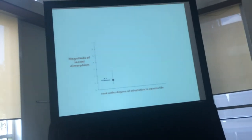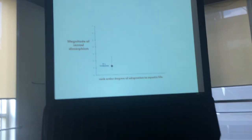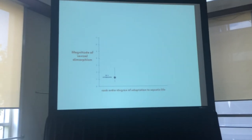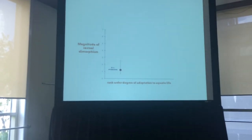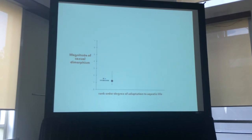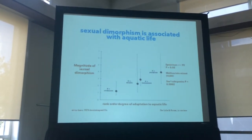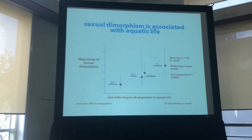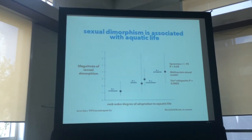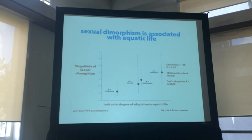First, we can ask whether we are getting the evolution of sexual dimorphism in the nascent stages of speciation. Plotting the magnitude of sexual dimorphism on the y-axis against the degree of adaptation to the aquatic phase on the x-axis, we find significant variation in sexual dimorphism among subspecies, and a significant positive association with aquatic life. Subspecies that spend more of their adult life in the aquatic phase have a greater magnitude of sexual dimorphism, consistent with past work showing that sexually antagonistic natural selection occurs in the aquatic phase.